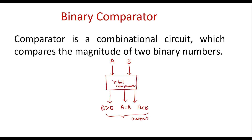If a is greater than b, then the comparator will make that output high. Similarly, if a is equal to b, then the comparator will make that output high. And if a is less than b, then the comparator will make that line high. So this is how the comparator works.